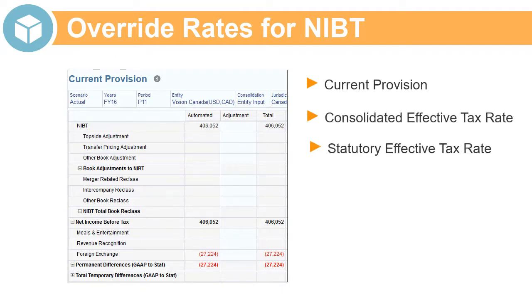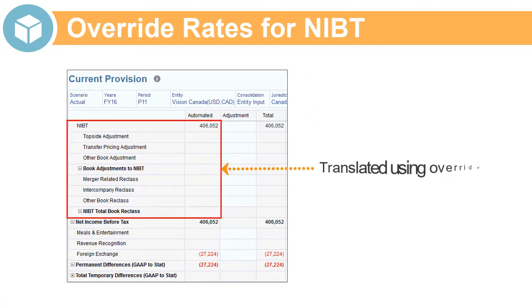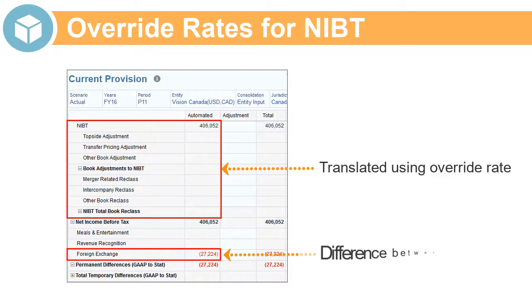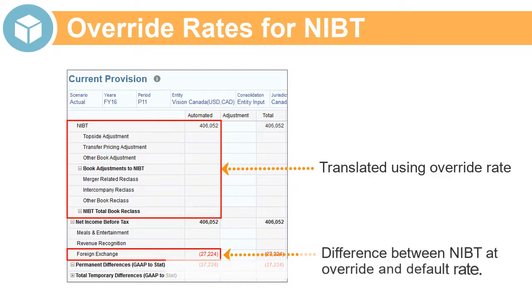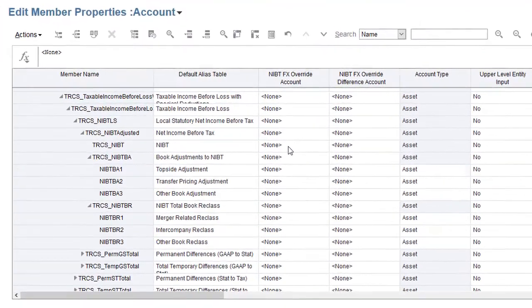By default, these accounts are translated using the current period exchange rate. You may need to override the default rate with a blended rate. The net income before tax accounts are translated using the override rate, and the difference between the account values translated at the override rate and at the default rate is posted as a permanent difference.